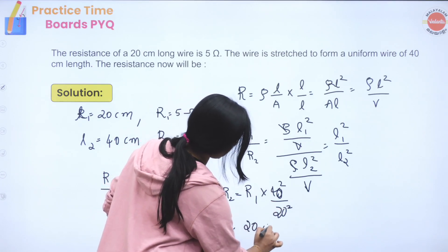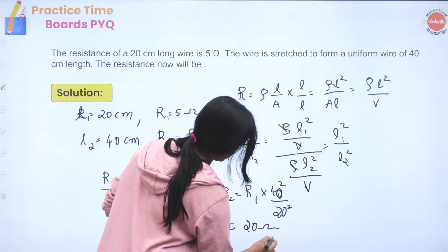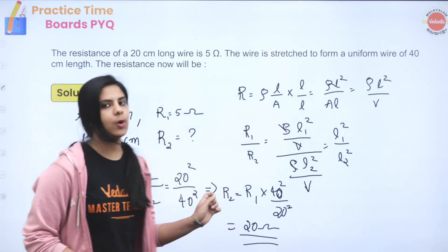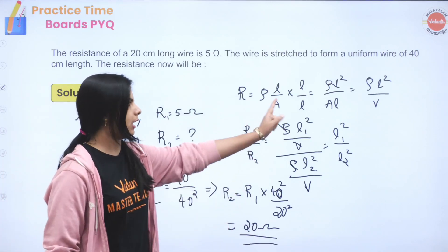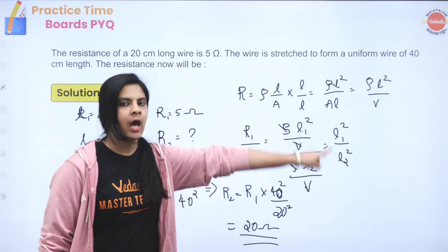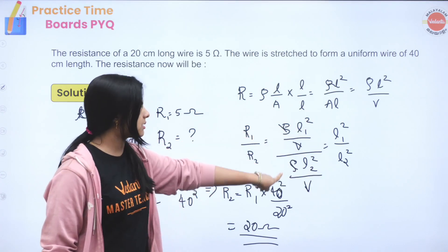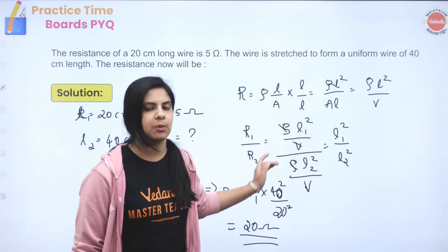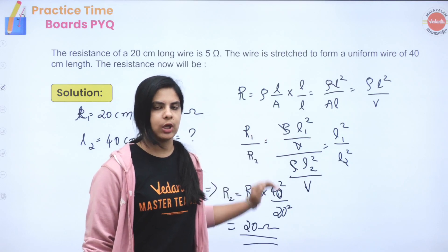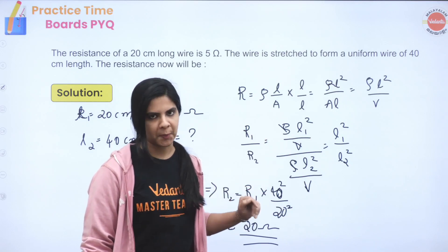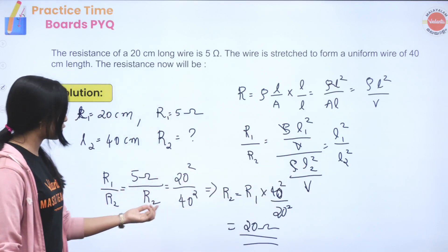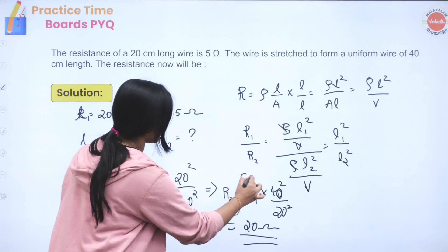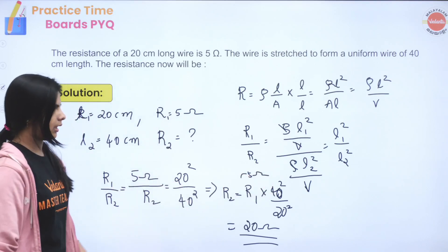R2 is equal to 20 ohm. We solved this using volume constant: area into length equals volume, that's why resistivity cancels. When we take the ratio, everything cancels except L1² and L2², giving us R2 equal to 20 ohm.